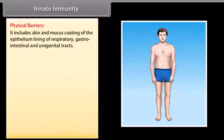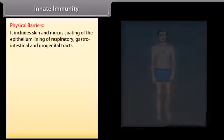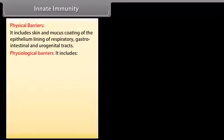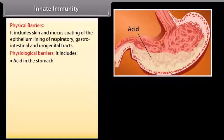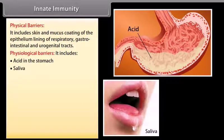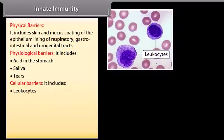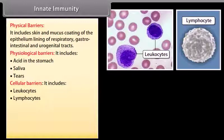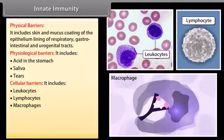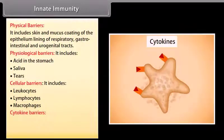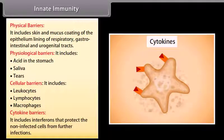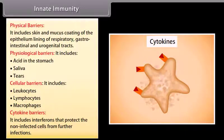Physical barriers include the skin and mucus coating of the epithelium lining of the respiratory, gastrointestinal, and urogenital tracts. Physiological barriers include acid in the stomach, saliva, and tears. Cellular barriers include leukocytes, lymphocytes, and macrophages. Cytokine barriers include interferons that protect non-infected cells from further infections.